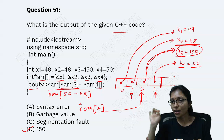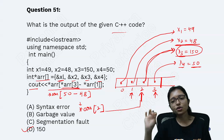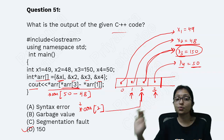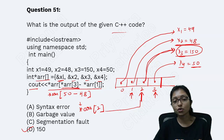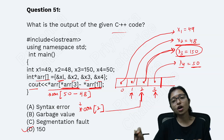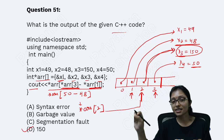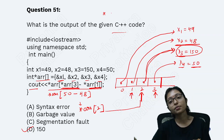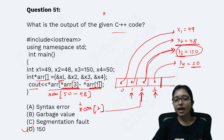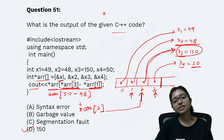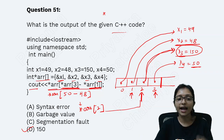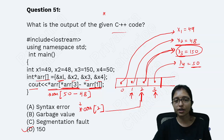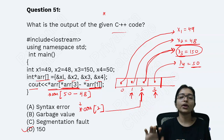Very good question, right? Within less time you are able to understand everything, I hope. This is the value, not the address. Whenever you use star with a pointer, you are taking the value. And the outer star means from that array, at that index location, you find the value. Very good question on pointers.